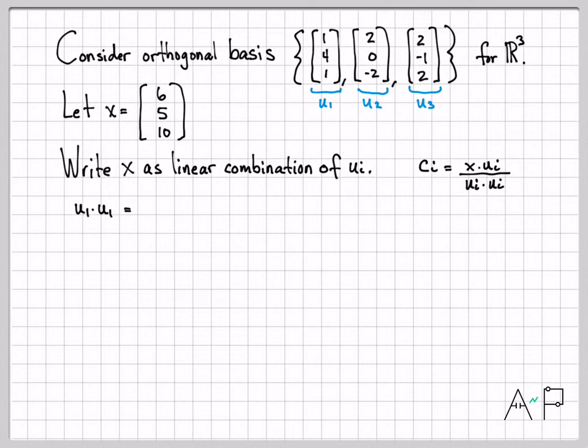So I need to compute c₁, c₂, and c₃. c₁ in the denominator is going to have u₁ dotted with u₁. So let's go ahead and compute all of the normalization factors first. So u₁ dotted with itself is just going to be 1 times 1 plus 4 times 4 plus 1 times 1. So 1 plus 16 plus 1 gives me 18.